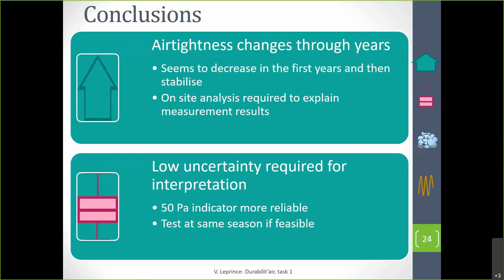In conclusion, the state of the art shows that airtightness changes over the years — it seems to decrease in the first years and then stabilize, since there is not much difference between studies performed after two or three years and those after 25 years. There is a real need for on-site analysis to explain measurement results. To reduce uncertainty, it is better to use the 50 Pascal indicator and to test at the same season if feasible. Thank you for your attention.